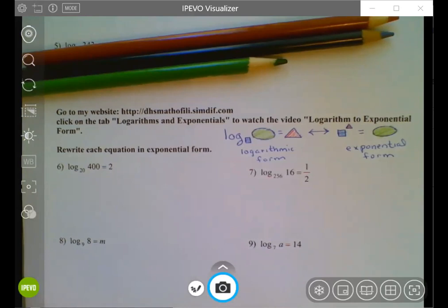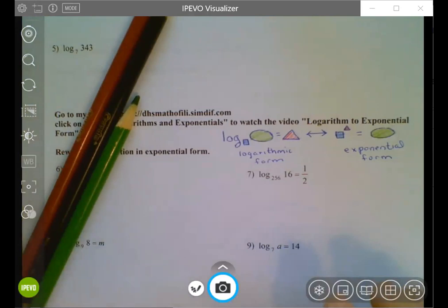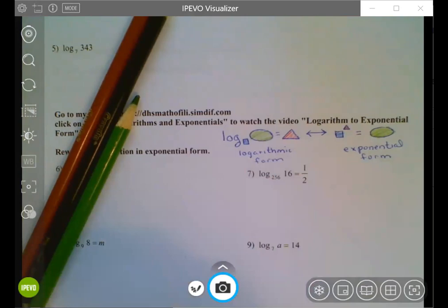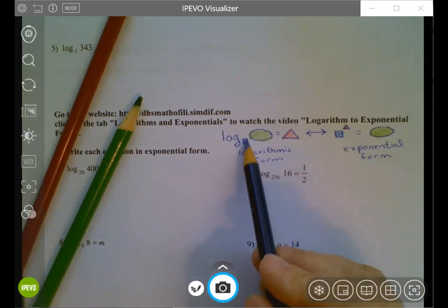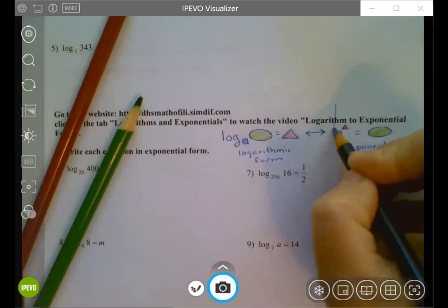So I'm very visual, so I like to look at things in terms of just the pieces rearranging. So we have logarithmic form and exponential form, and they all have three parts. They have the base, which is the number that gets raised to an exponent in exponential form, and in logarithmic form it's just written down here as a little subscript with the log. That's the base.